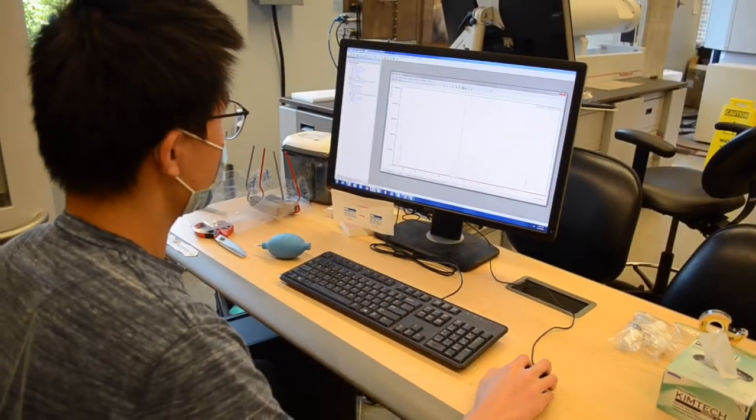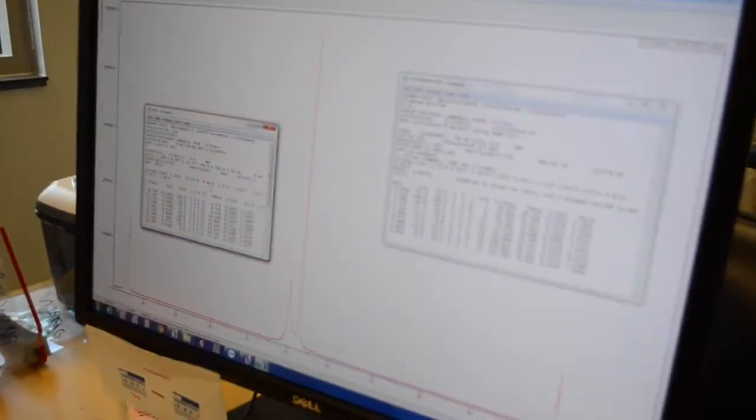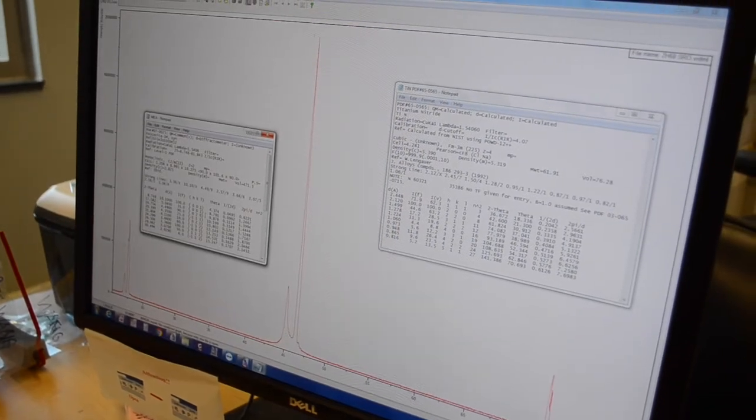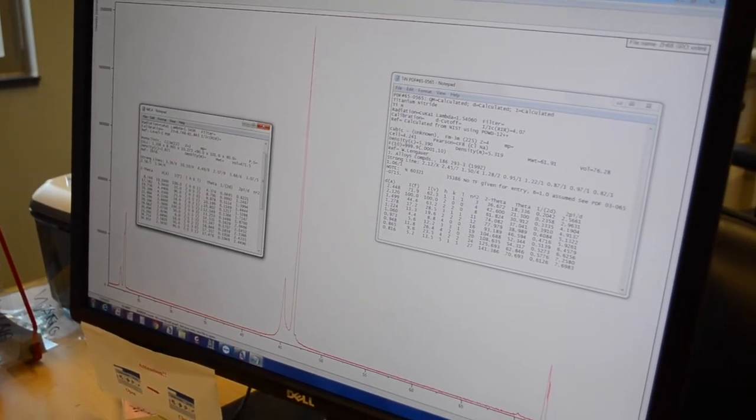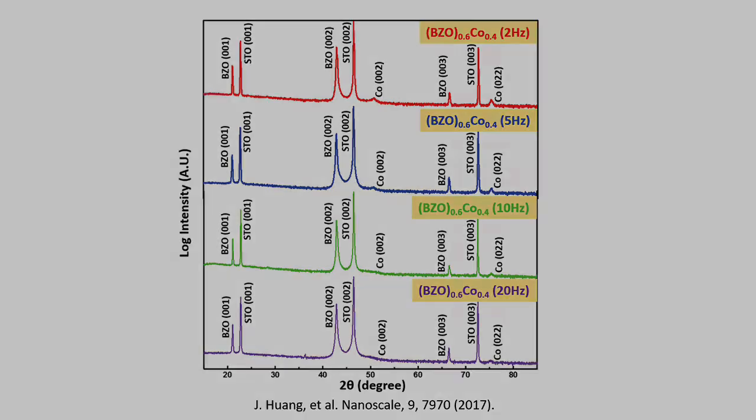We can perform high-resolution XRD theta-two-theta scan after we carefully align the sample's height, theta, omega, chi, and phi. From this XRD spectrum, we are able to identify and quantify the phase information, determine the crystallinity of the film, and measure superlattice in multilayered epitaxial structures.